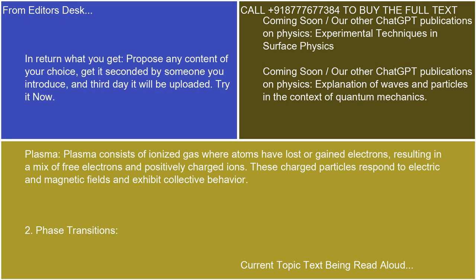Plasma: Plasma consists of ionized gas where atoms have lost or gained electrons, resulting in a mix of free electrons and positively charged ions. These charged particles respond to electric and magnetic fields and exhibit collective behavior.